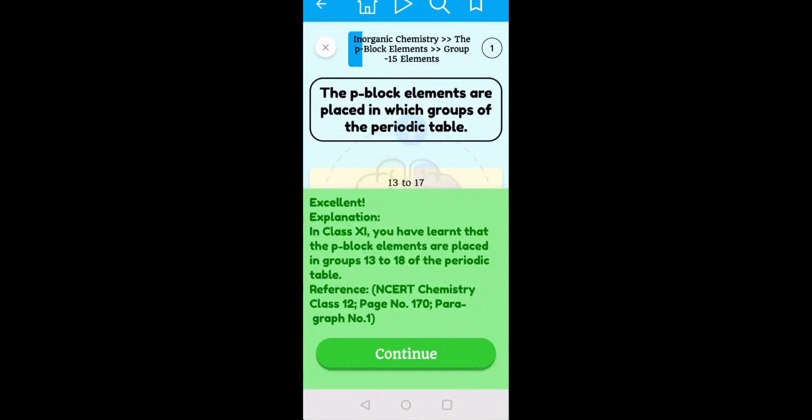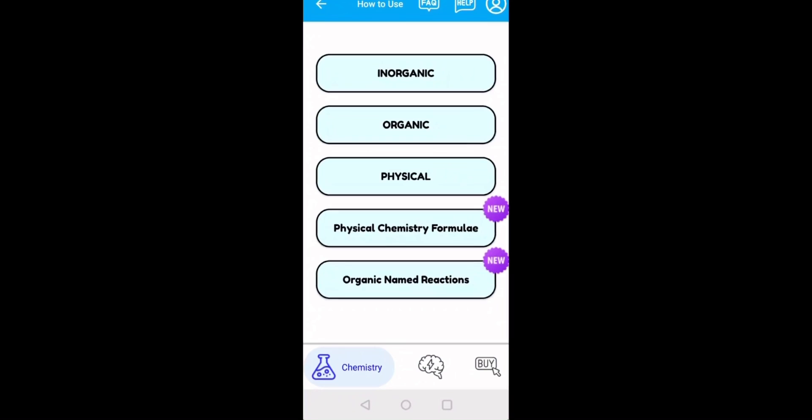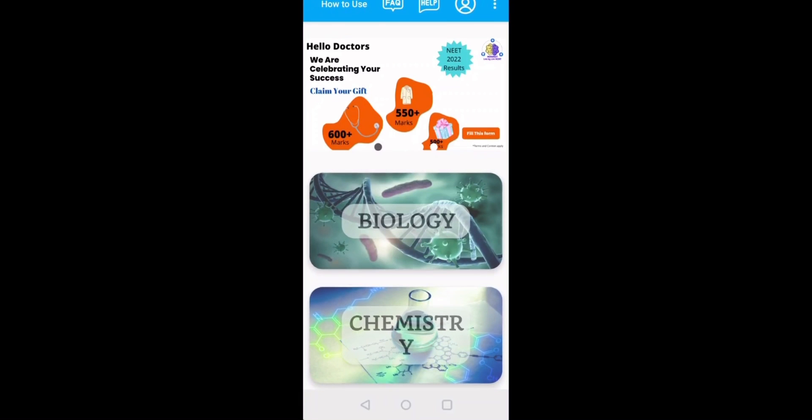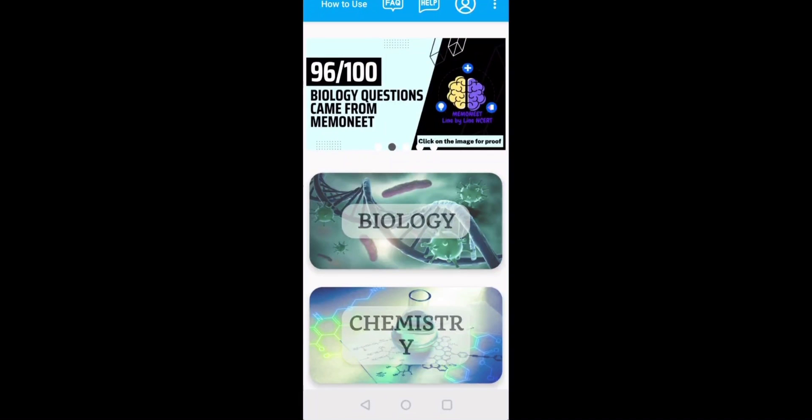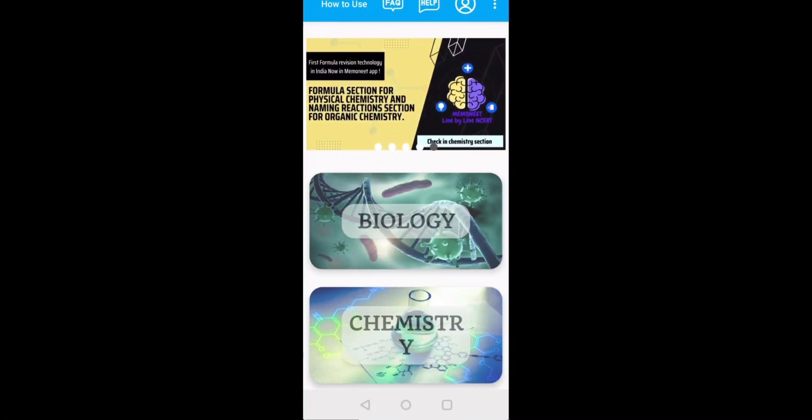So that's how from each and every line of NCERT, they have actually picked up questions. And not just that, especially as far as chemistry is concerned, they have also given organic name reactions in one place, physical chemistry formula in one place, so that revision in one time can be easily done. So amazing app for biology and a really good app for chemistry. Do try it. Do try out the free portion and only then if you consider it's worthwhile, it will help in your preparation. Go ahead and purchase it.